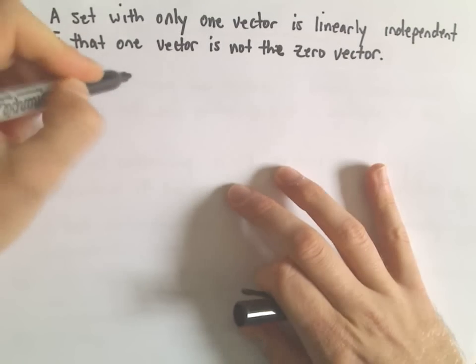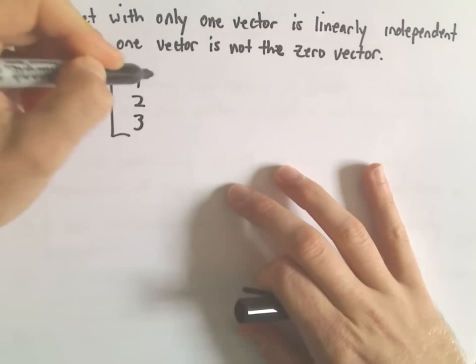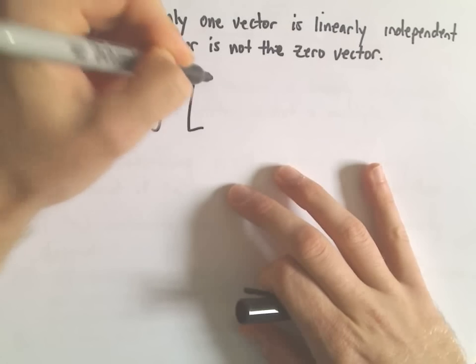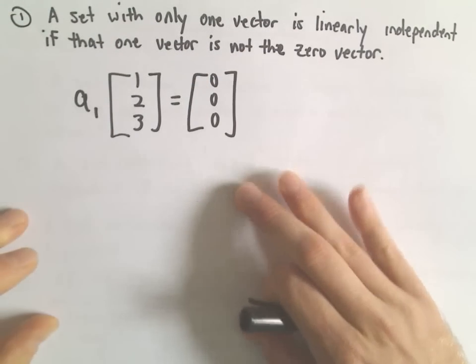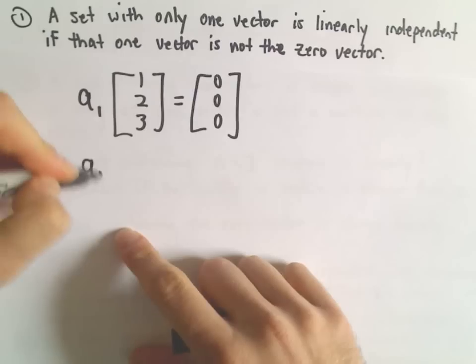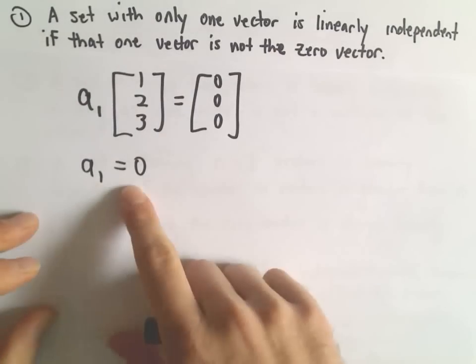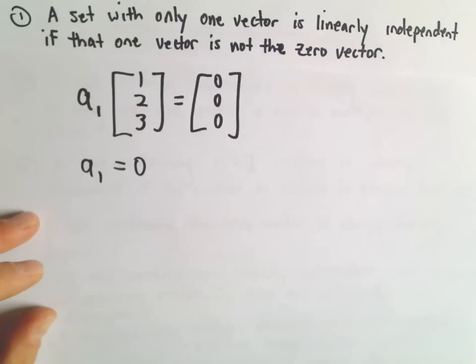If you have some random vector, say [1, 2, 3], the only way that's going to equal the zero vector, if you multiply it by some scalar, is if the scalar equals zero. And if the only solution is when the scalar equals zero, that means it's linearly independent.